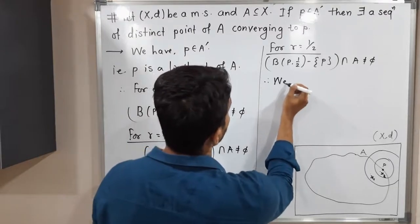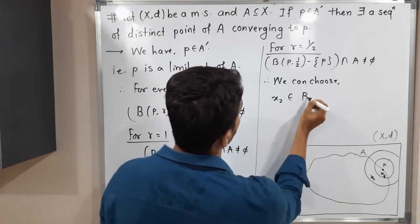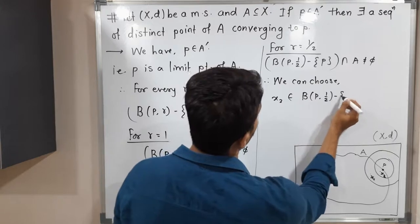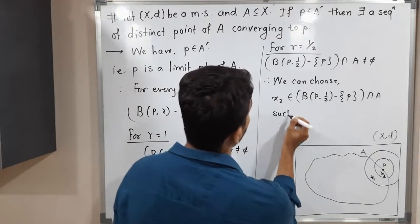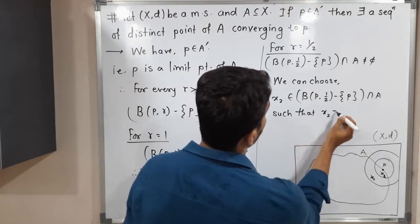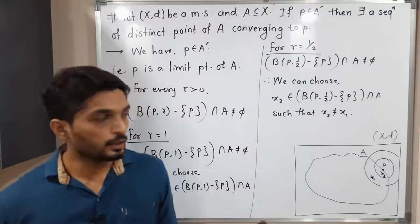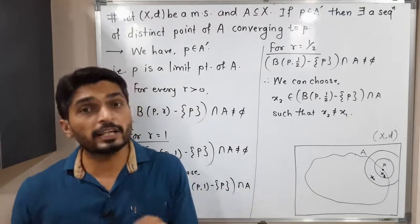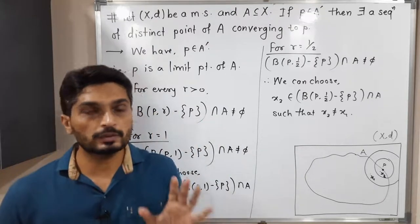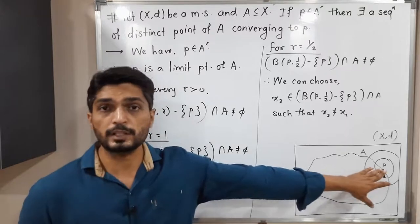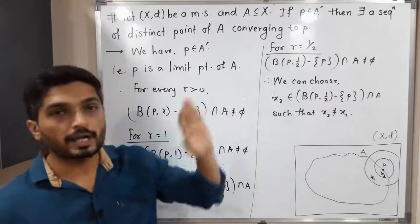We can choose x₂ belonging to B(p, 1/2) minus {p} intersected with A, such that x₂ is not equal to x₁. That means we select a different point — we should not take the same point x₁. This is definitely possible since the statement is true for every r greater than 0, so for any such intersection we can find a point x₂ other than x₁.